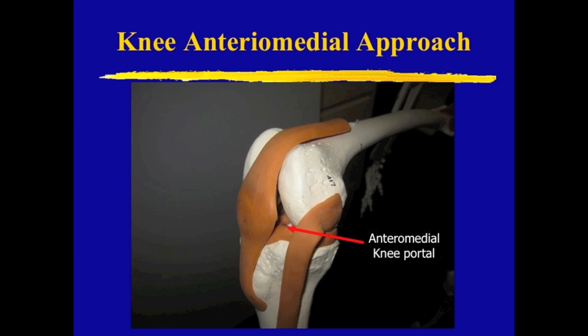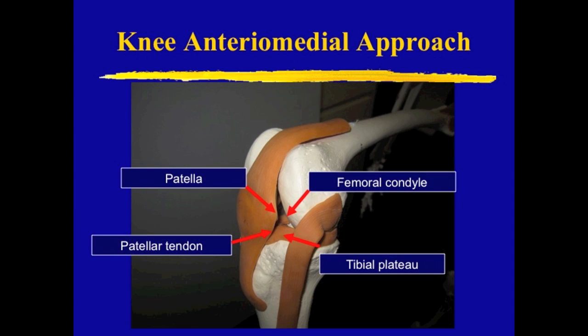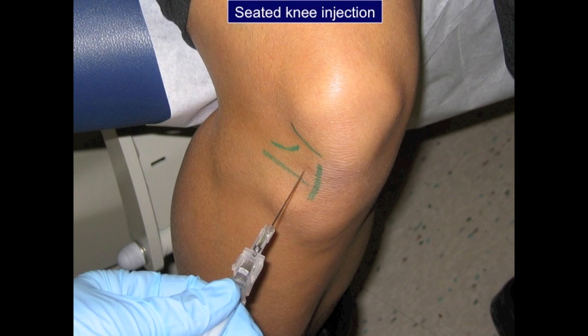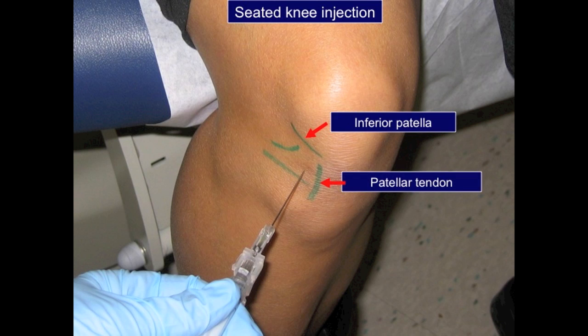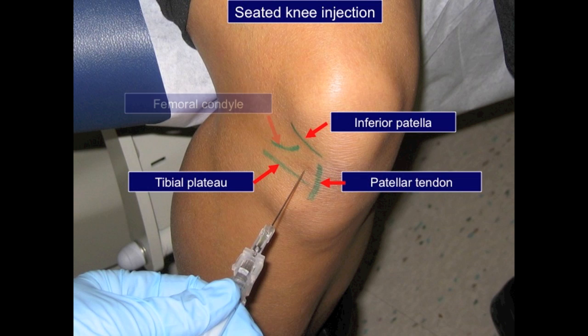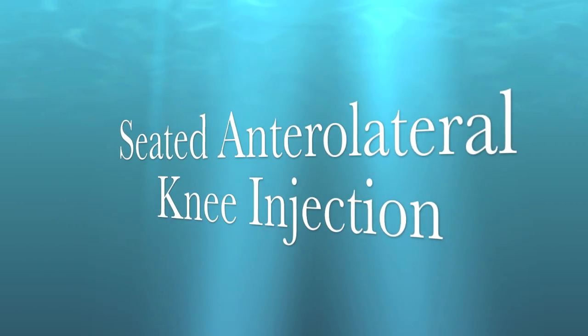These anatomical landmarks are the same for the anteromedial approach, just found on the medial side. Seen on a patient, identify by palpation the same landmarks in clockwise order: the inferior patella, the patellar tendon, the tibial plateau, and the femoral condyle. Once you have the anatomical landmarks, mark the center of the soft spot, being careful not to go too close to the femoral condyle, which tends to curve further inferior than your palpable edge.